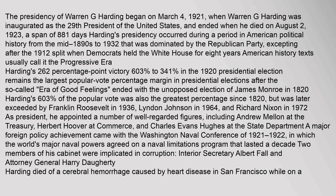The presidency of Warren G. Harding began on March 4, 1921, when Warren G. Harding was inaugurated as the 29th President of the United States, and ended when he died on August 2, 1923.